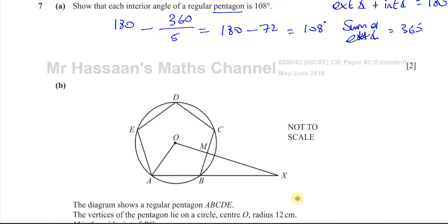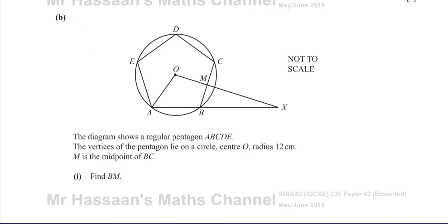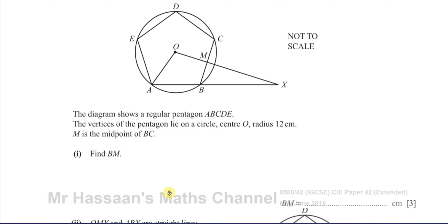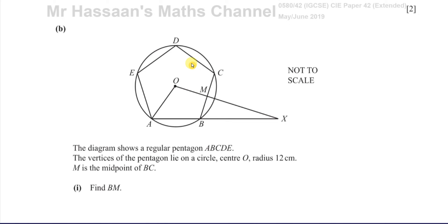Now for part B: the diagram shows a regular pentagon ABCDE. The vertices of the pentagon lie on a circle, center O — so it's inscribed within the circle. The radius of the circle is 12 centimeters. M is the midpoint of BC. Find BM.